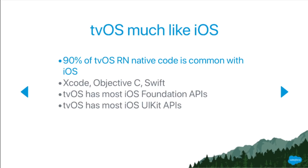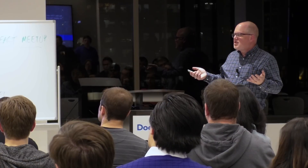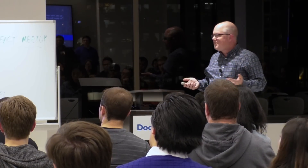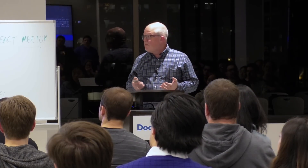Because Apple TV shares so much code in common with iOS, this project was actually a lot easier than it would have been otherwise. The port of React Native to Windows, for example, has been a very large effort with multiple engineers that took years. I did this port in about three to four months — one person — because 90% of the code didn't have to be changed at all. It's just Xcode, Objective-C, Swift; most of the foundation APIs and UIKit APIs are there.